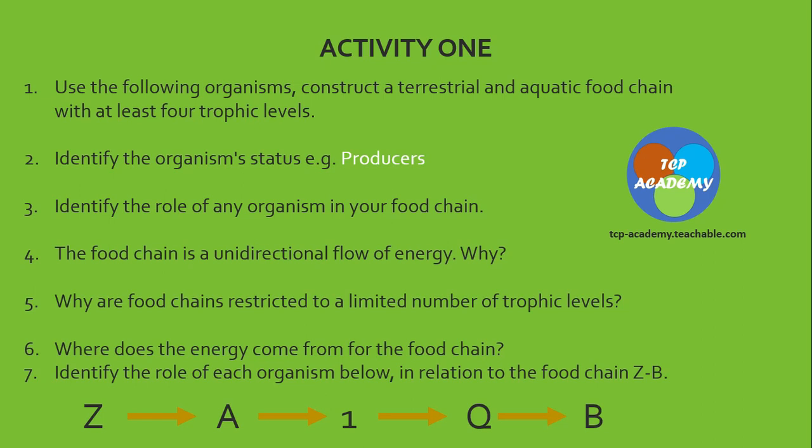Are we suggesting that the frog in this case will be eating the snake? Usually it doesn't happen. There are some cases where the predator can become the prey — there's a switch sometimes — but usually it's not the case in a food chain. Why are food chains restricted to a limited number of trophic levels? Just go back through the video and all these answers can be found. Where does the energy come from for the food chain? Be reminded that the sun is not a part of the food chain. Identify the role of each organism in relation to food chain Z to B.